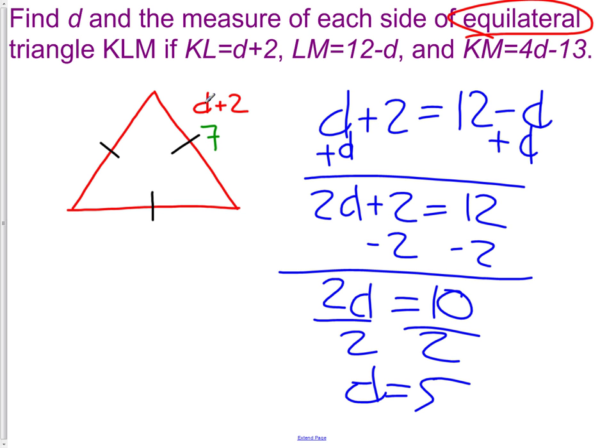The bottom side when we started the problem was our 12-d side. D is still 5, so we have 12-5, which again is 7.